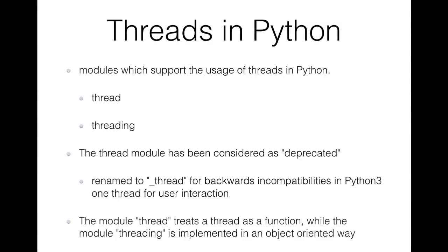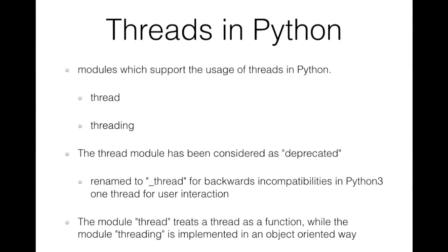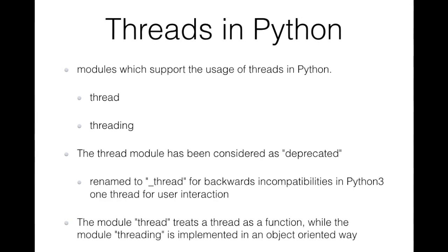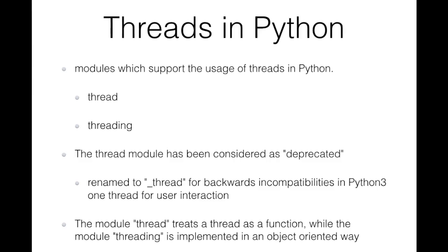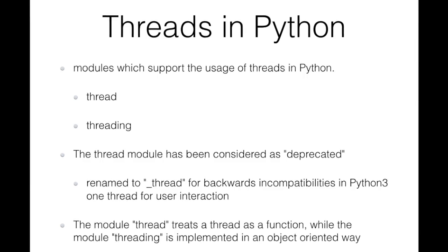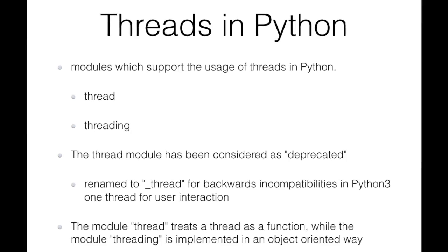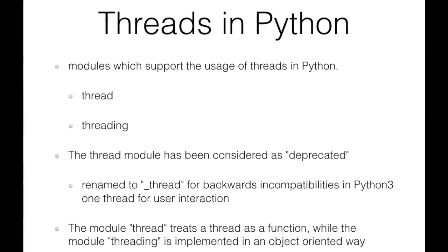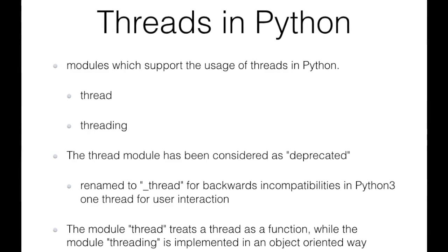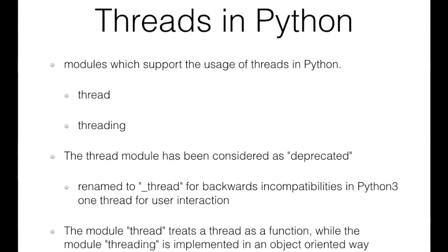In Python there are two modules that support threads: the thread module and the threading module. The thread module has been considered deprecated for a long time, so users are encouraged to use the threading module instead. In Python 3, the thread module is not directly available but can be accessed indirectly as _thread for backward compatibility. The difference between them is that the thread module treats the thread as a function, while the threading module is implemented in an object-oriented way.